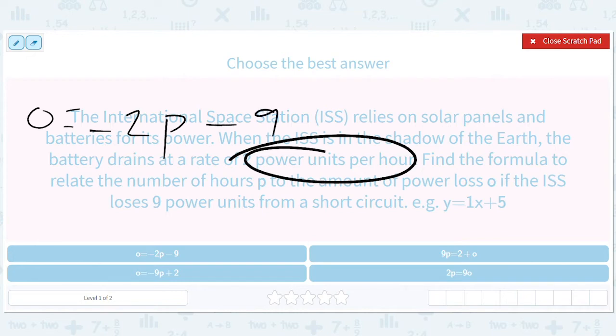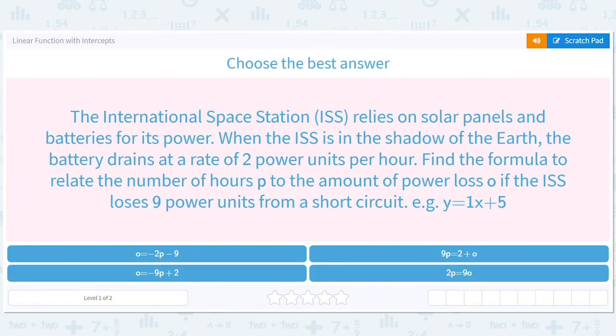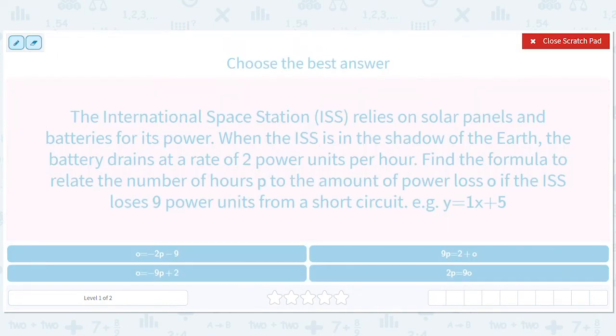So it starts off already down nine. You know what? I'm going to give you guys a pro tip here. Let's just use y and x. We can figure out the letters at the end, right? So y equals negative 2x minus nine.